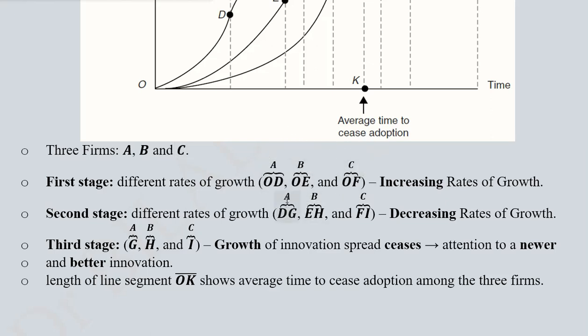This was the second stage from point D to G, and that was for firm A. For firm B, it was from point E to H. And for firm C, it was from point F to I. This was showing the decreasing returns. And that was the point where the spread was ceasing.